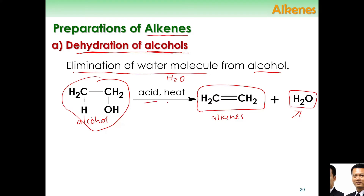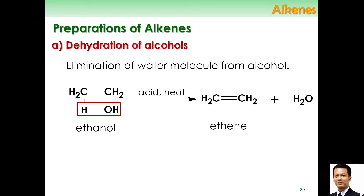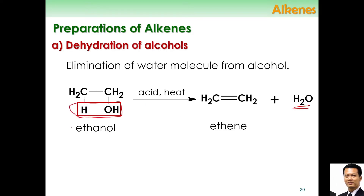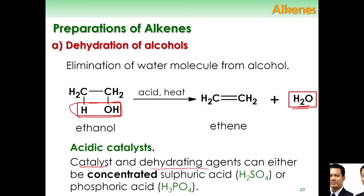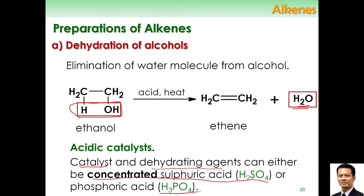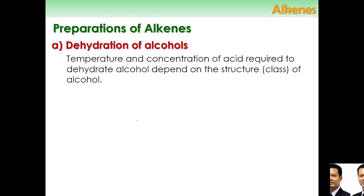You need two things here: acid and heat. Specifically, the alcohol is ethanol and the alkene is ethene. The water comes from the elimination of H and OH from the alcohol. The things that you need is an acidic catalyst. The catalyst and dehydrating agent can either be concentrated sulfuric acid H2SO4 or phosphoric acid H3PO4. This is the acid that is needed for you to form alkene from the process called dehydration of alcohol.